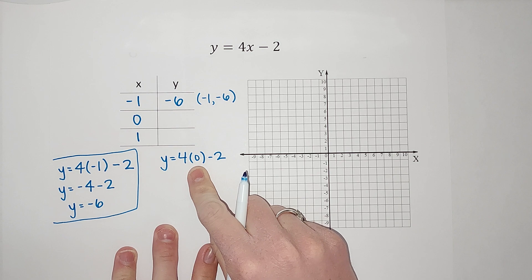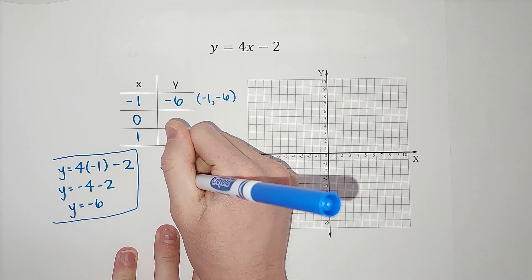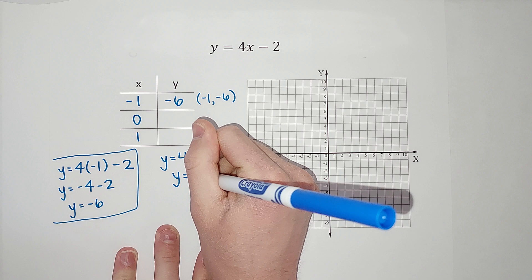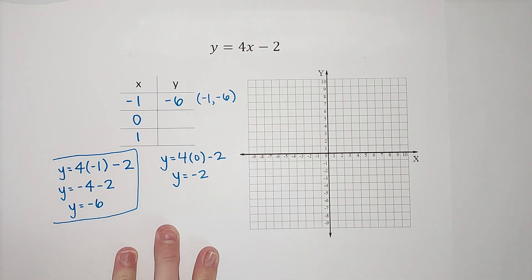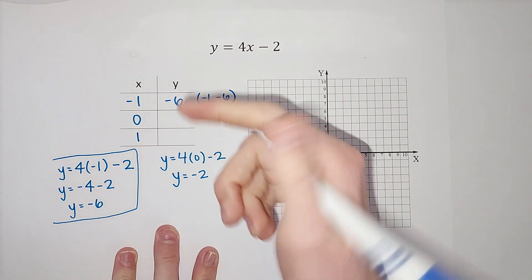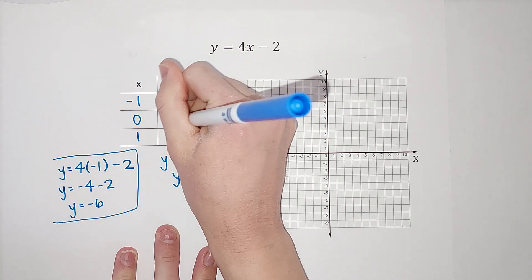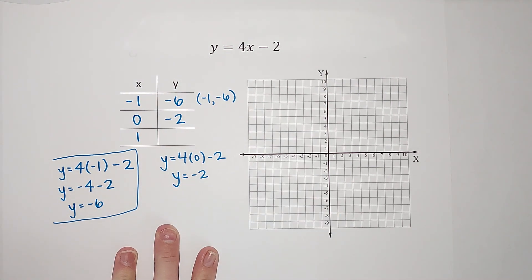Well, anything times 0 is 0, right? So that goes away. And I'm just left with y equals negative 2. Look at that. So when x is 0, y is negative 2.